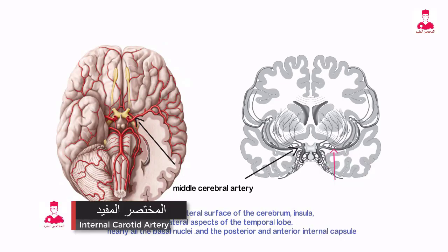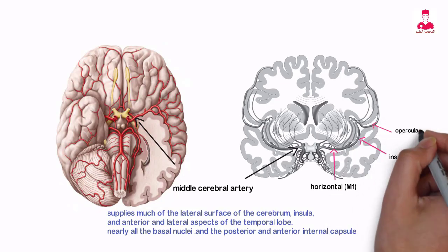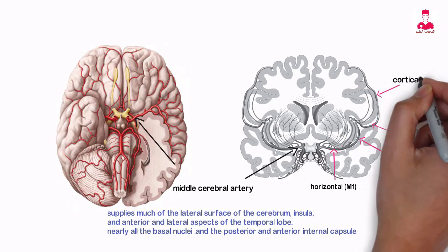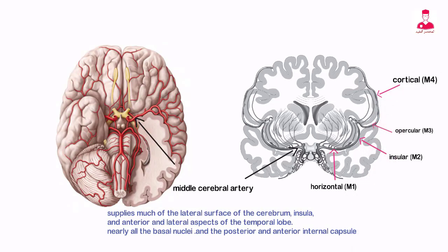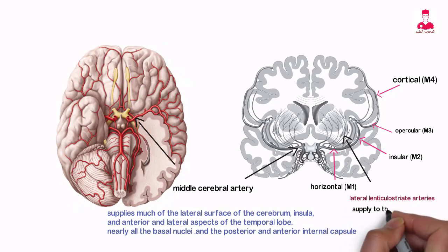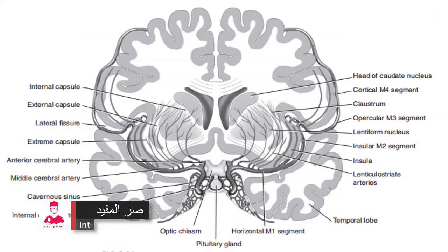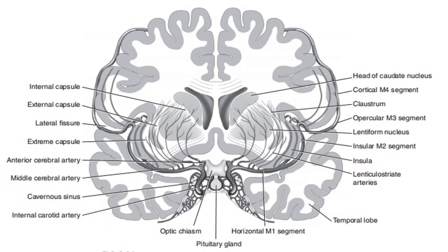The four major segments of the middle cerebral artery are the horizontal, insular, opercular, and posterior. The horizontal segment courses from the origin at the ICA bifurcation laterally toward the insula and branches into the lateral lenticulostriate arteries, which supply the lentiform nucleus, parts of the internal capsule, and caudate nucleus. The insular segment courses along the insula, continuing as the opercular segment that emerges from the lateral fissure. Upon exiting the lateral fissure, the opercular segment becomes the cortical segment, which splits into the superior and inferior groups of cortical branches that supply nearly the entire surface of the cerebral hemispheres.